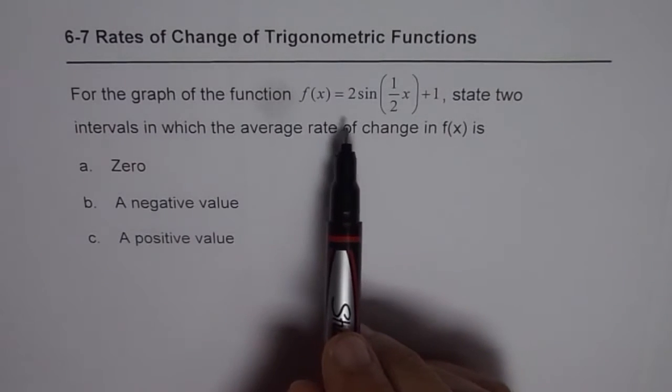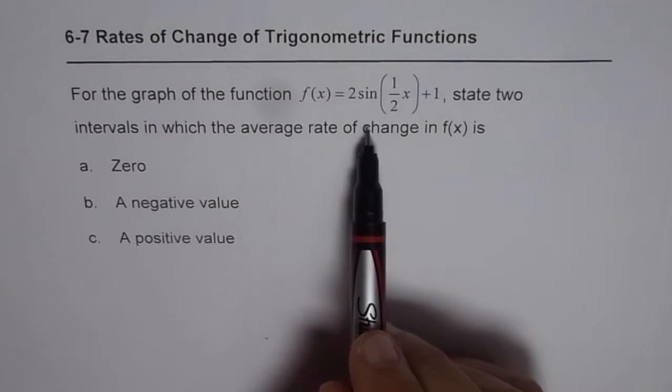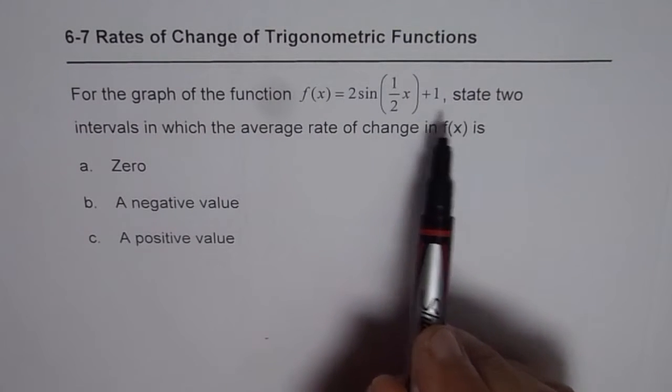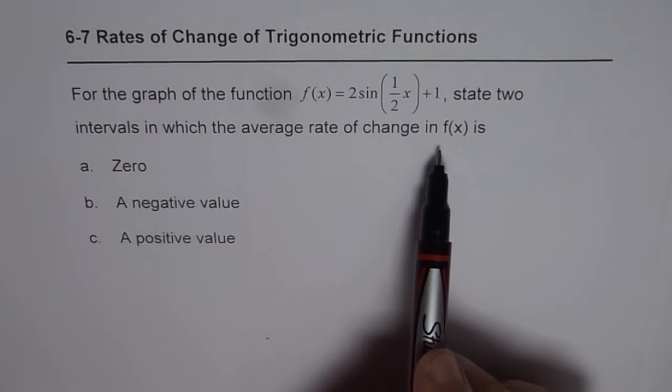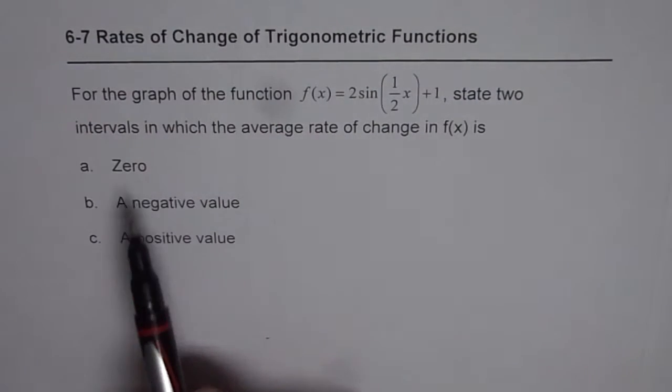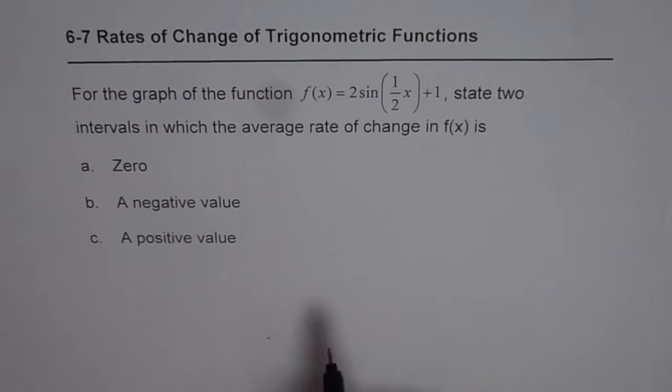For the graph of the function f of x equals 2 sine half x plus 1, state two intervals in which average rate of change in f of x is zero, a negative value, a positive value.